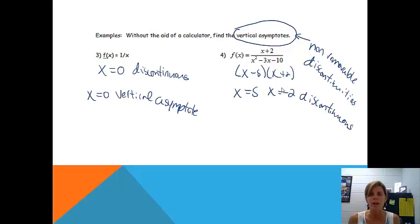We just need to decide, are either of these non-removable? Well, I noticed that I can cancel the x plus 2. So x equals negative 2 is a removable discontinuity. So actually there would be a hole there. So x equals 5, that is where, since that is non-removable, that is where we will see a vertical asymptote. So x equals 5, the line x equals 5 will be a vertical asymptote. And that is pretty much it.